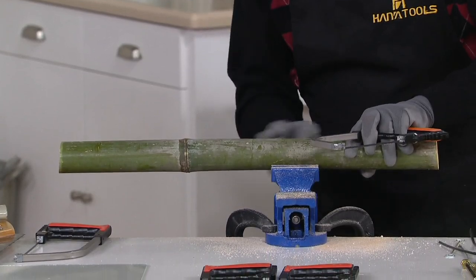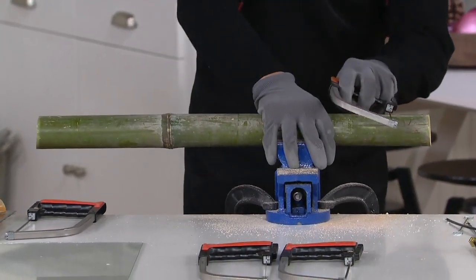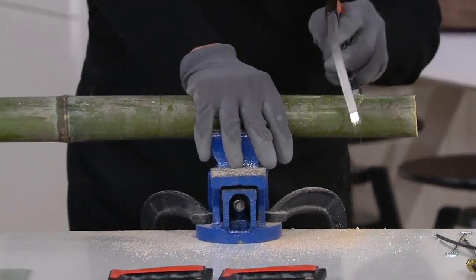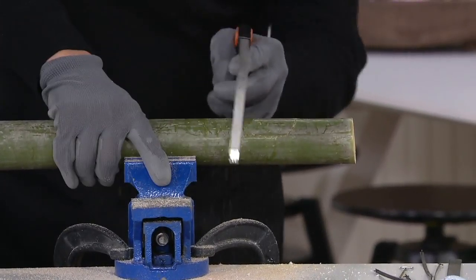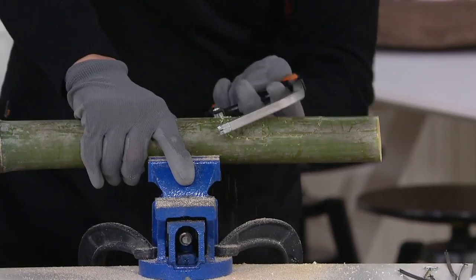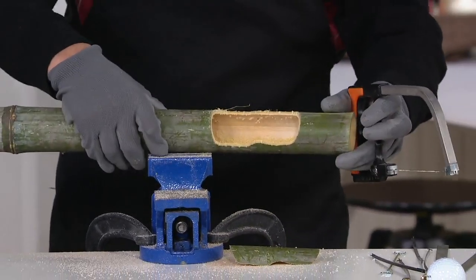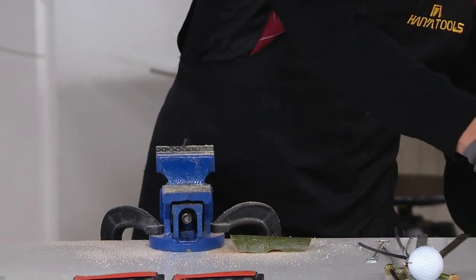So bamboo, if you use a normal saw, bamboo splinters. But a Magic Saw cuts it very smooth. And you can cut it straight or curved. He's cutting that by hand faster than I would with an electric jigsaw.